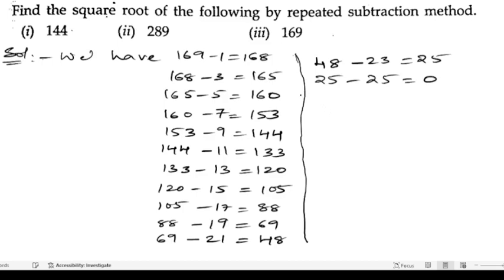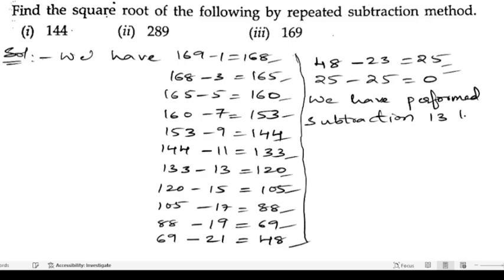So how many steps we got? 1, 2, 3, 4, 5, 6, 7, 8, 9, 10, 11, 12, 13. So 13 steps. We have performed subtraction 13 times. So hence, square root of 169 is 13.